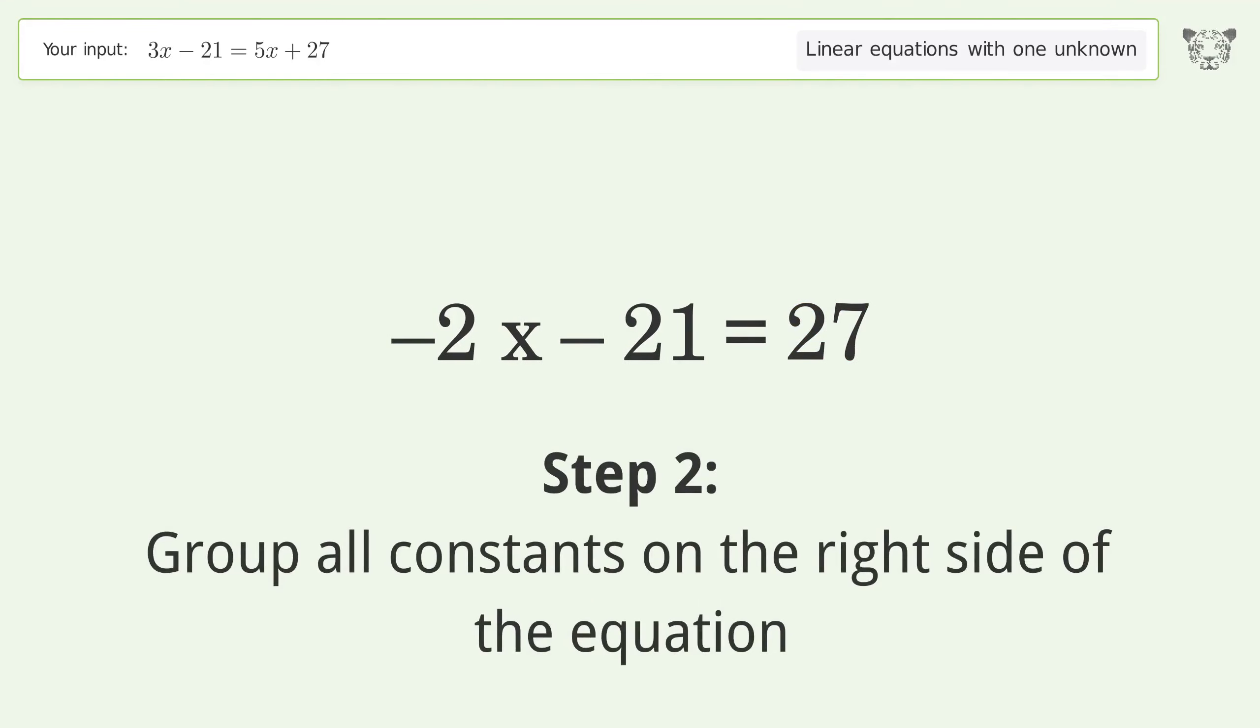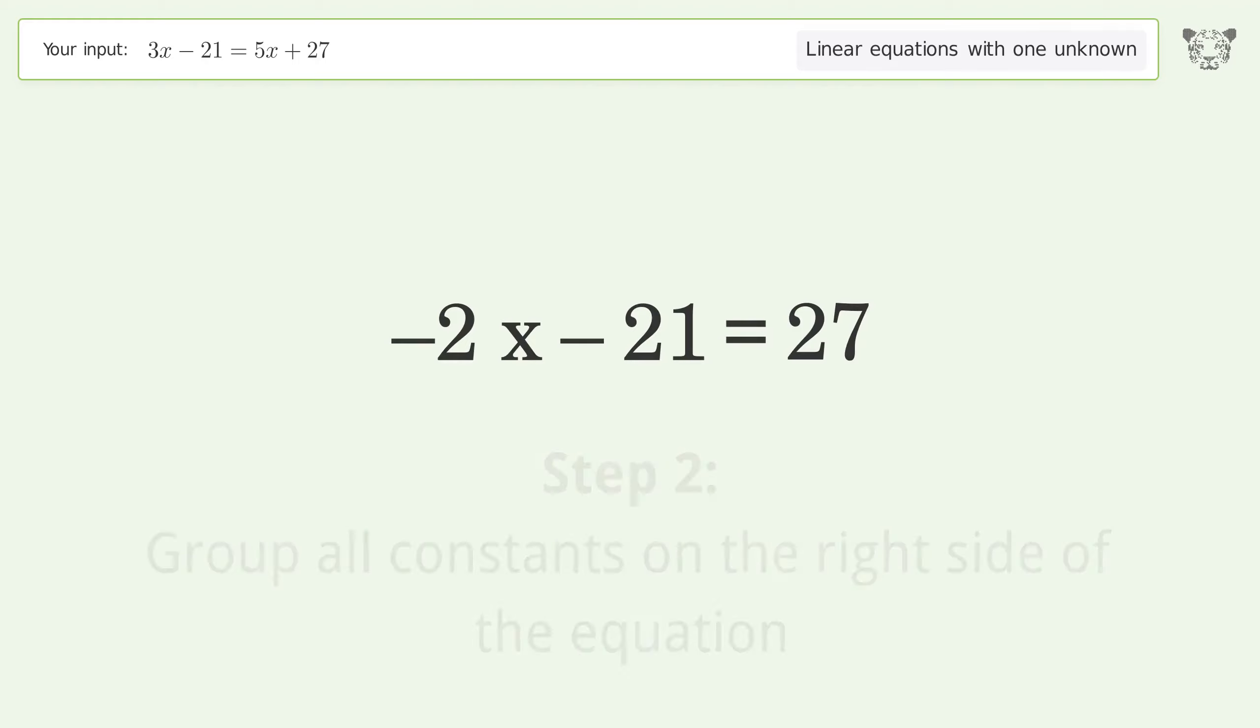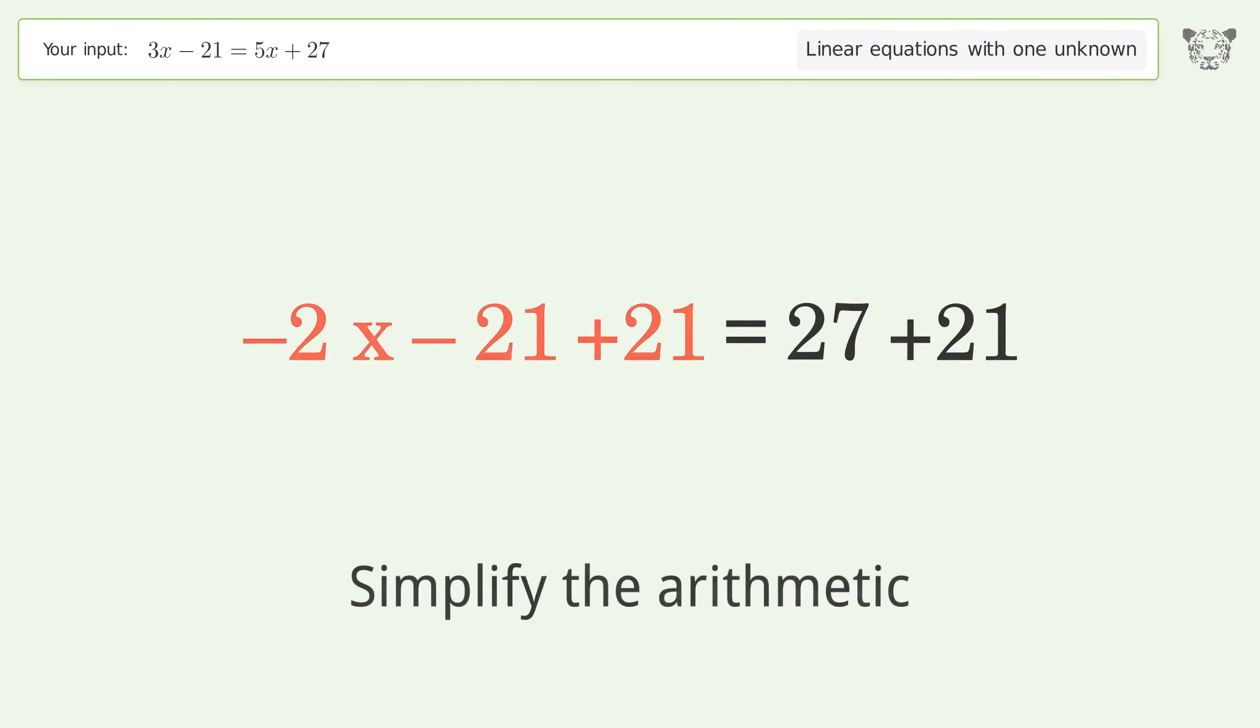Group all constants on the right side of the equation. Add 21 to both sides. Simplify the arithmetic.